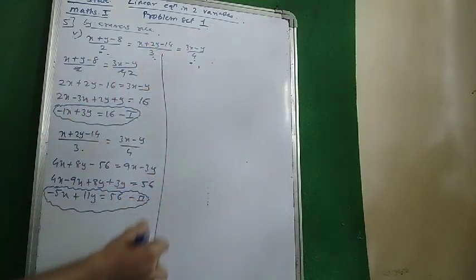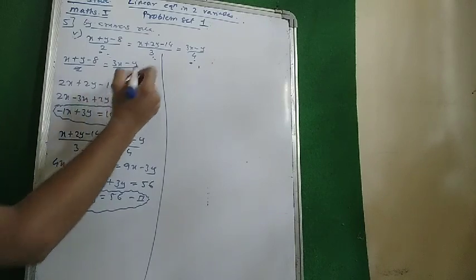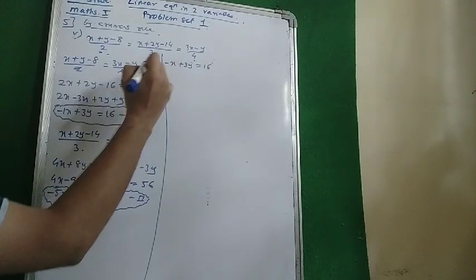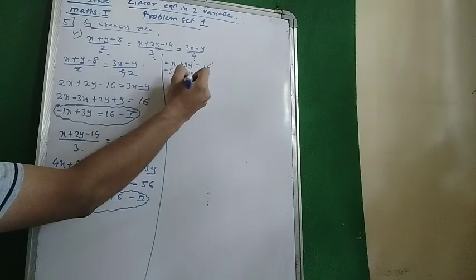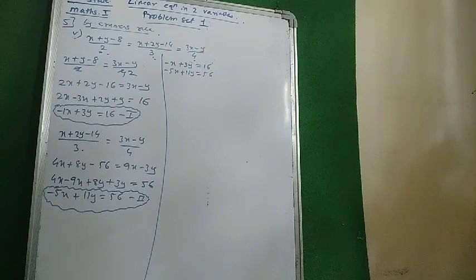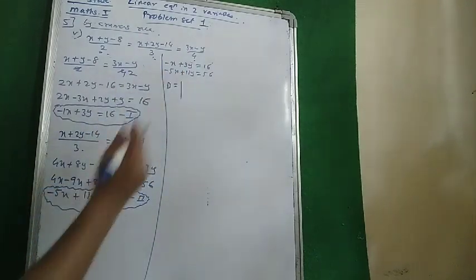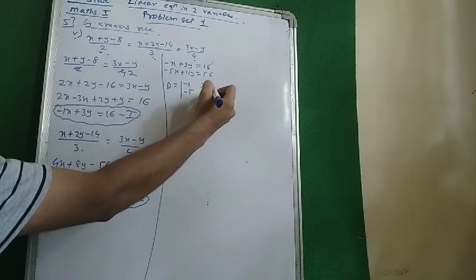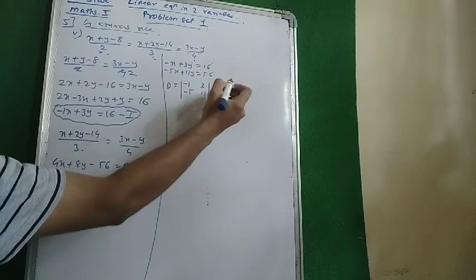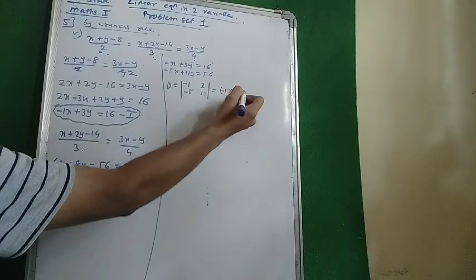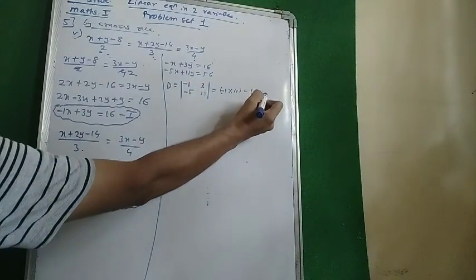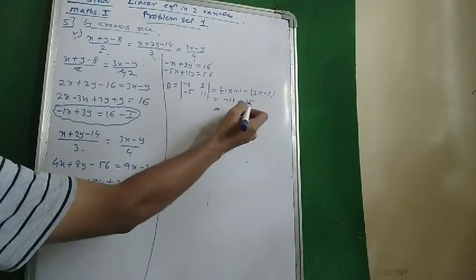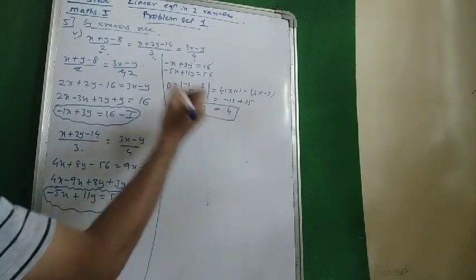Now applying Cramer's rule. Writing both equations: minus x plus 3y equals 16 (equation 1), and minus 5x plus 11y equals 56 (equation 2). To find D, using only the coefficients — minus 1, minus 5, 3, 11 — we get D equals (minus 1 into 11) minus (3 into minus 5), which is minus 11 plus 15, giving D equals 4.